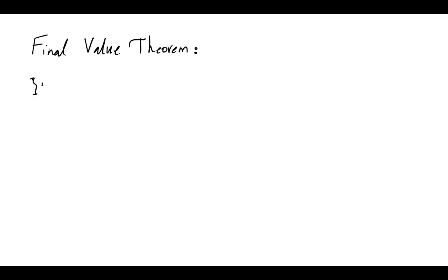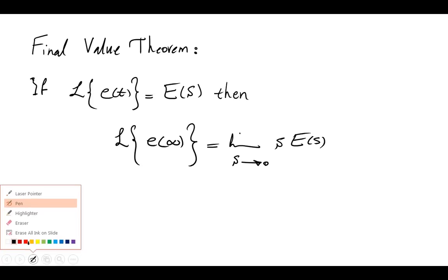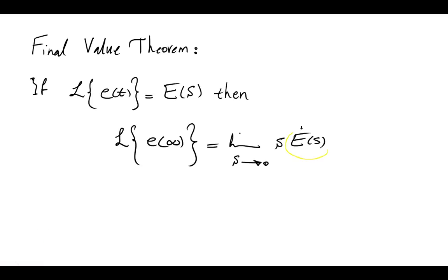The Final Value Theorem says that if the Laplace transform of a signal e(t) is given as E(s), then the steady state value E(∞) equals the limit as s goes to 0 of s × E(s). This is a very nice theorem because it says that if you have E(s), you multiply it by s and let s go to 0, and you end up with the steady state error. But for this purpose, we need to know E(s).